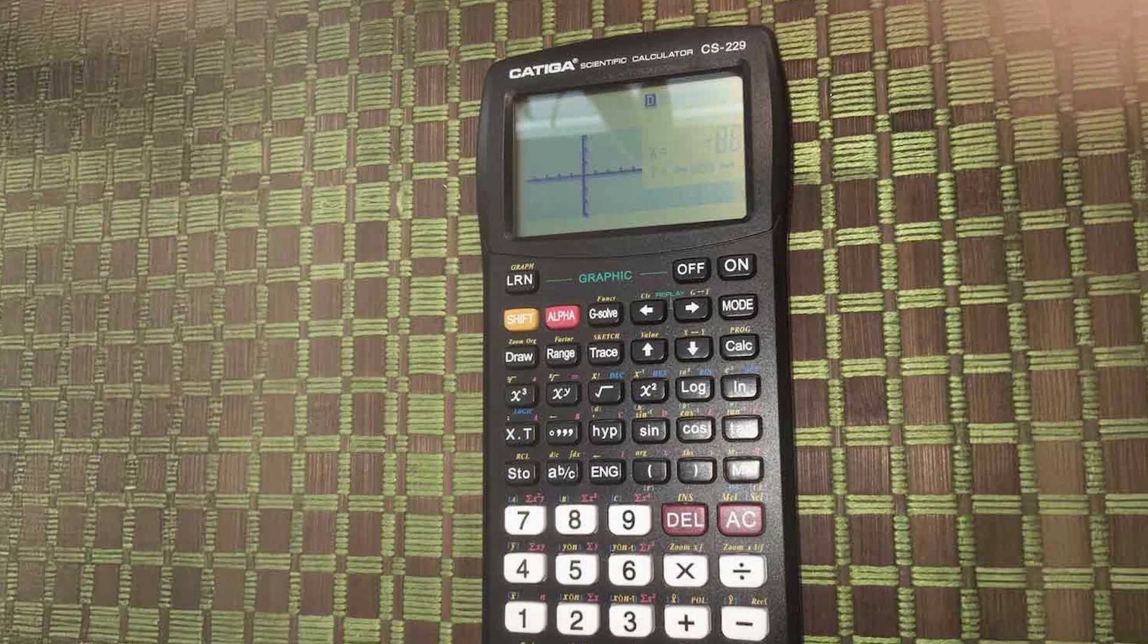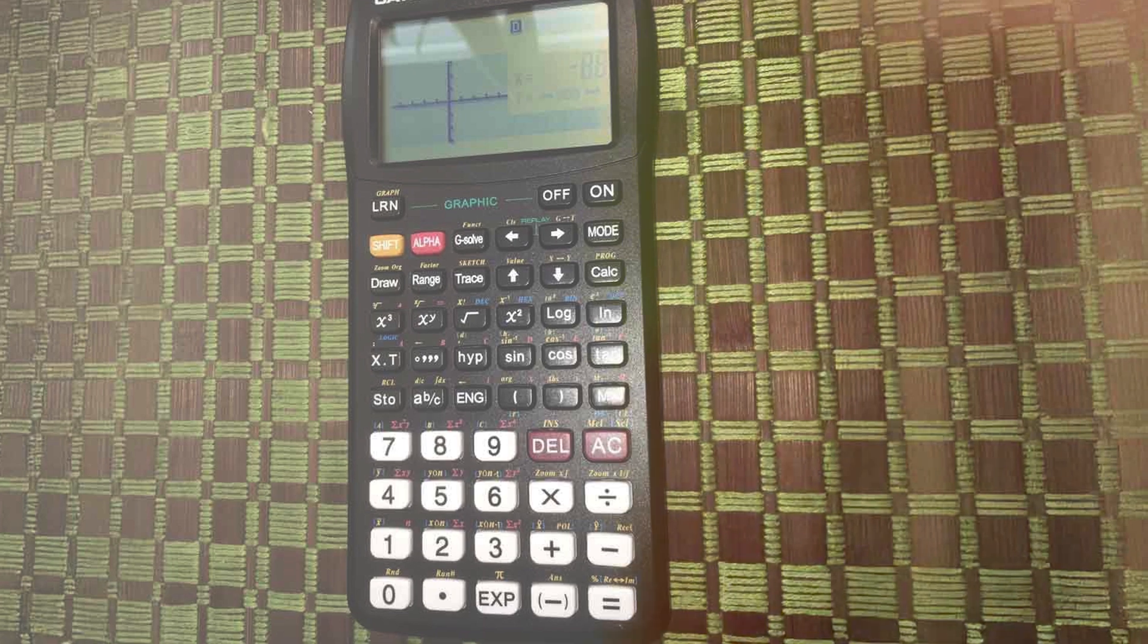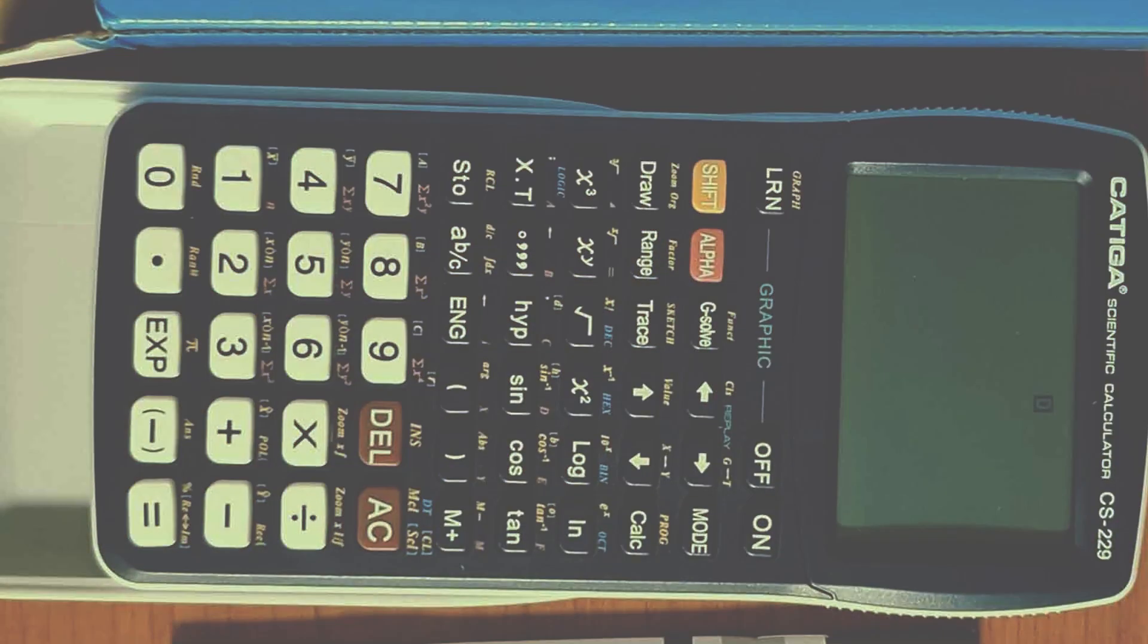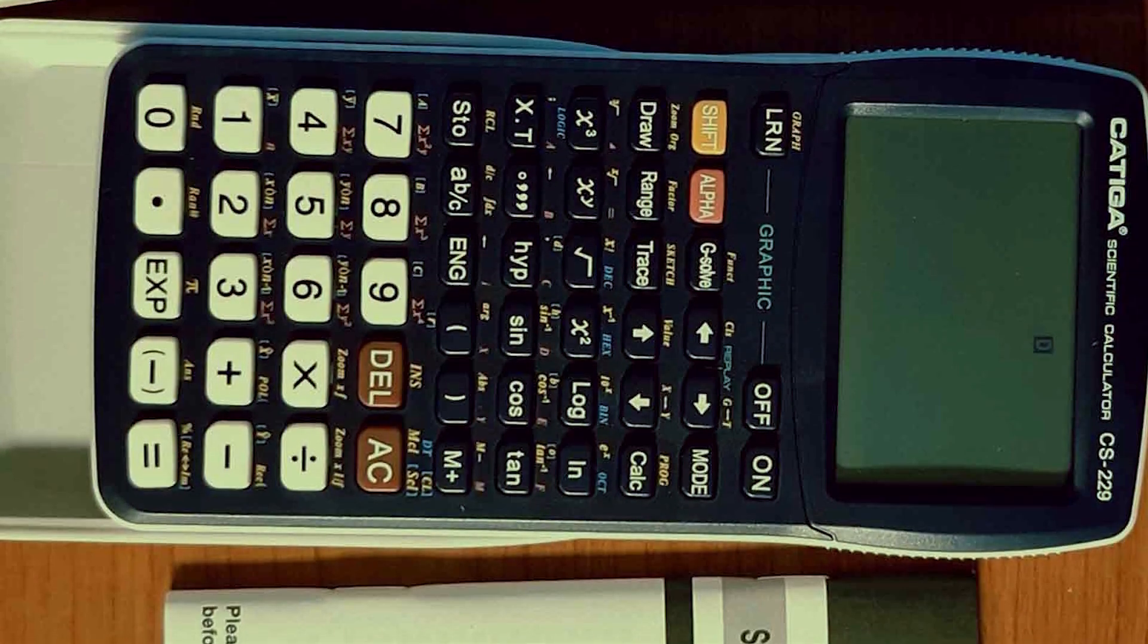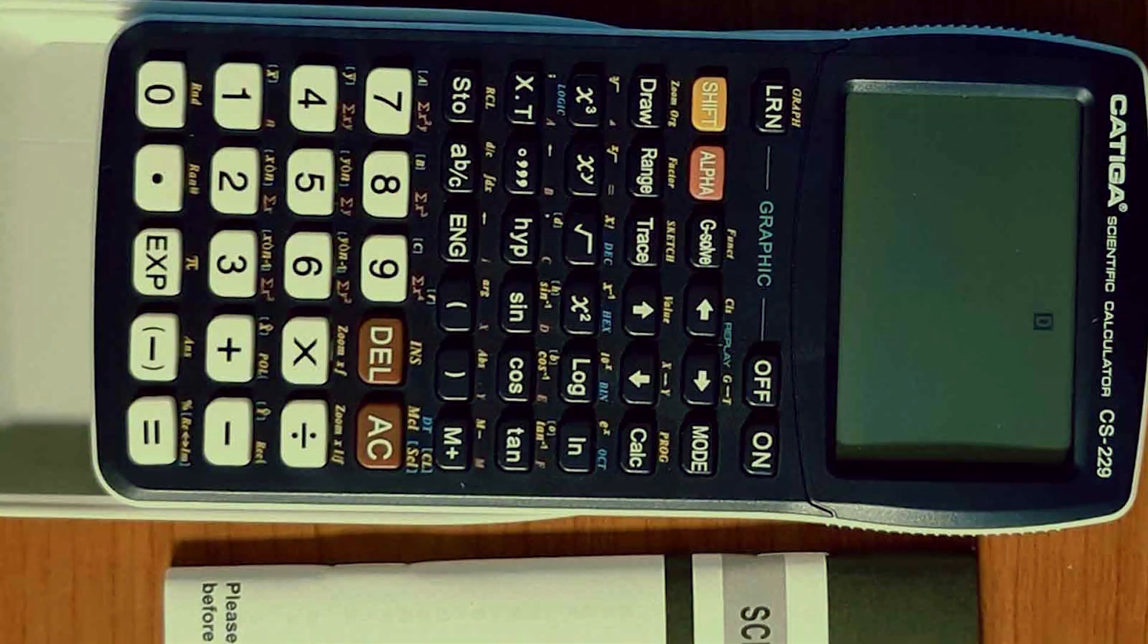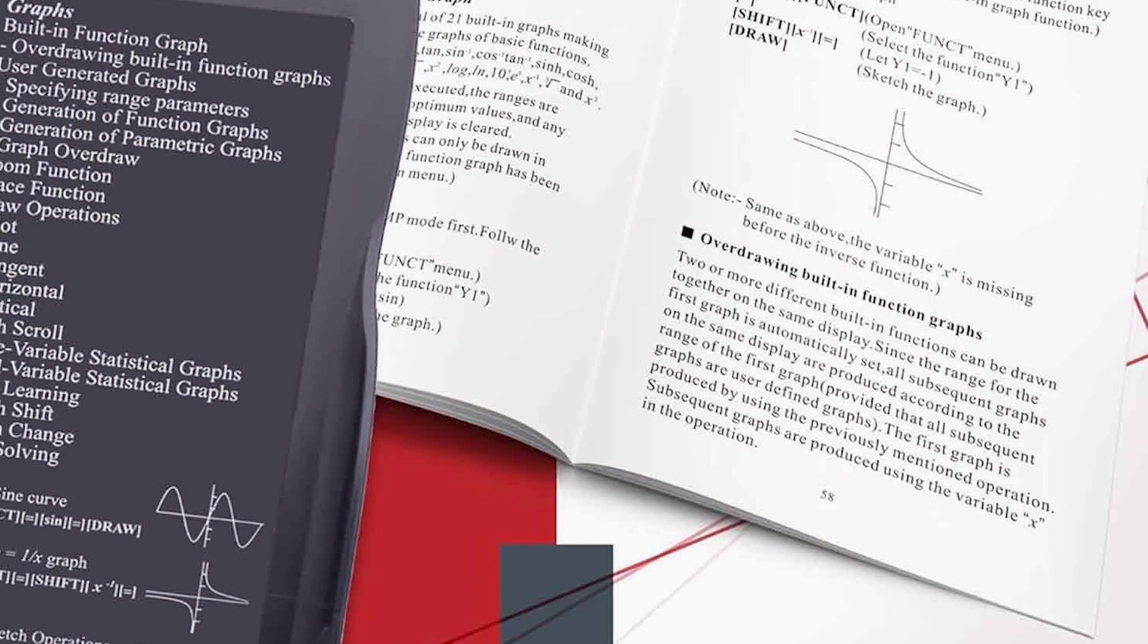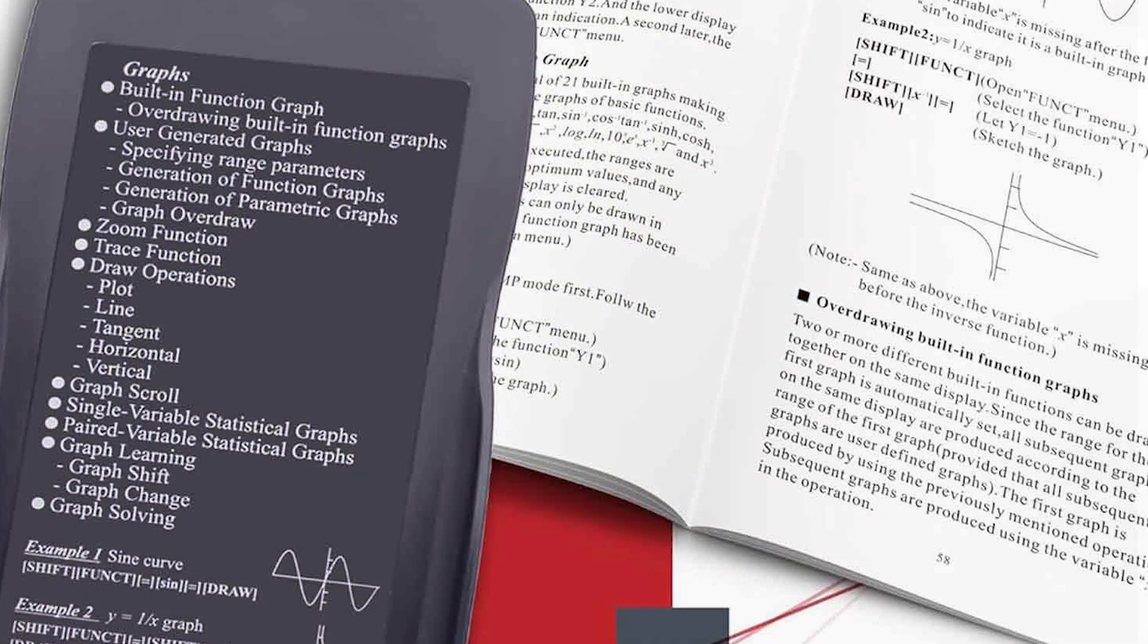The usability of the CS229 is boosted by its dual power system, which combines solar energy with battery power. This ensures that the calculator remains functional even in low-light conditions, a valuable asset for late-night study sessions or during power outages. The calculator also includes a large memory capacity, allowing you to store multiple calculations and recall them easily.